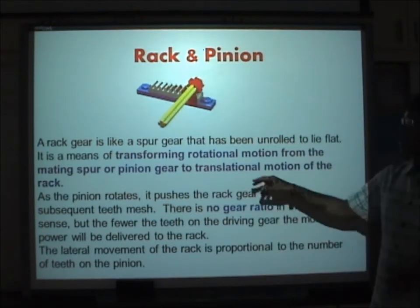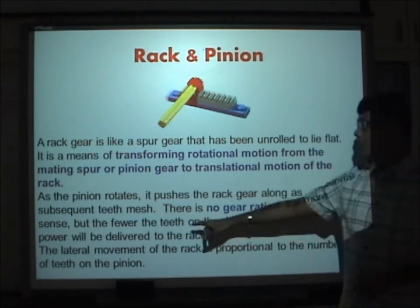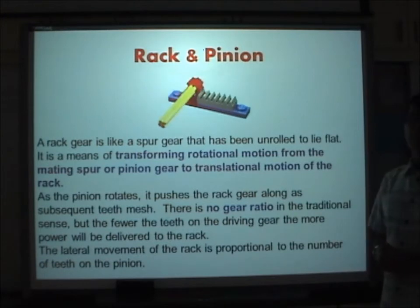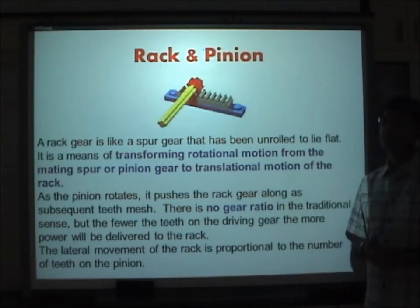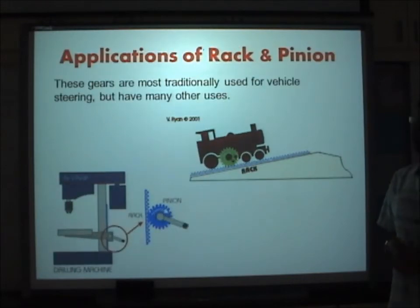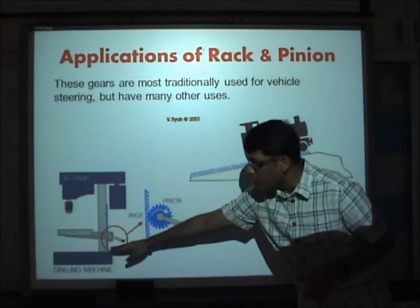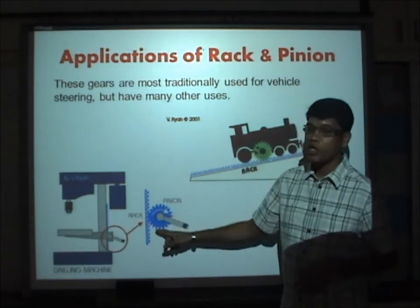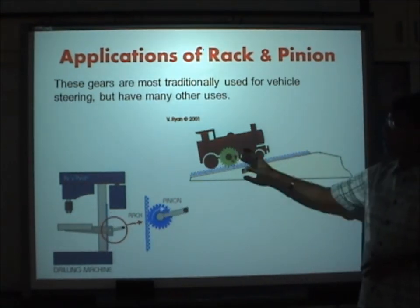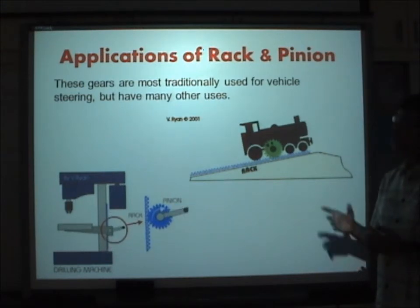As the pinion rotates and pushes the rack, subsequent teeth mesh in sequence. There is no gear ratio in the traditional sense for rack and pinion, but the fewer the teeth on the driving pinion, the more power delivered to the rack. The lateral movement of the rack is proportional to the number of teeth on the pinion. Examples include the drilling machine's work table moved up and down, and lifting heavy loads on a train using rack and pinion gears.